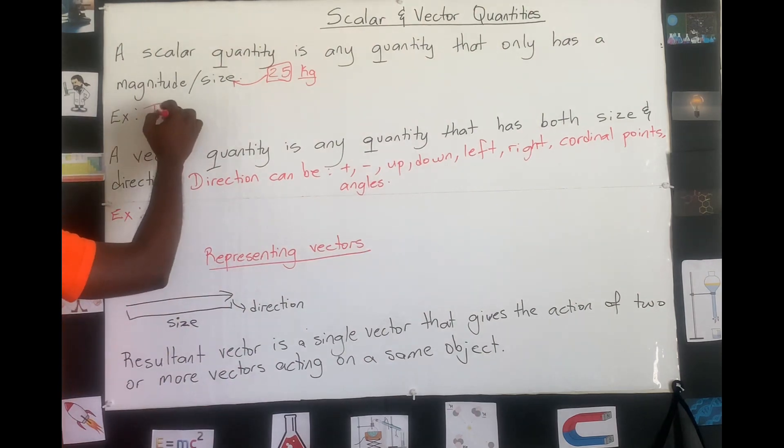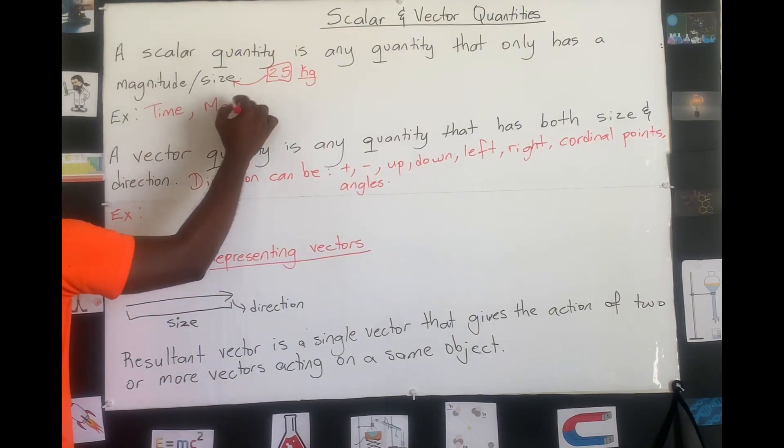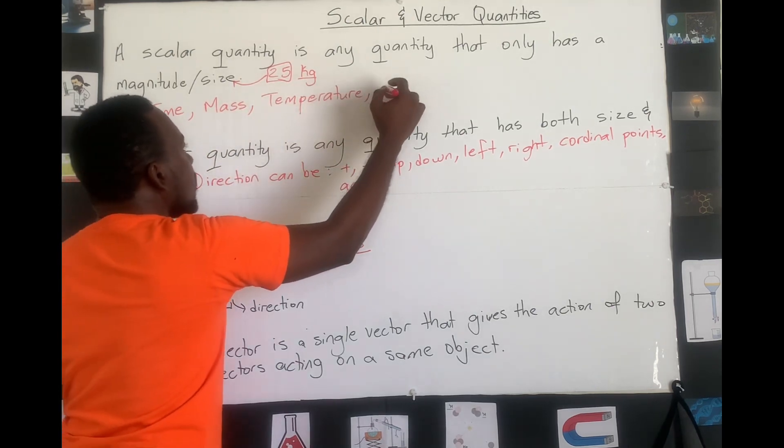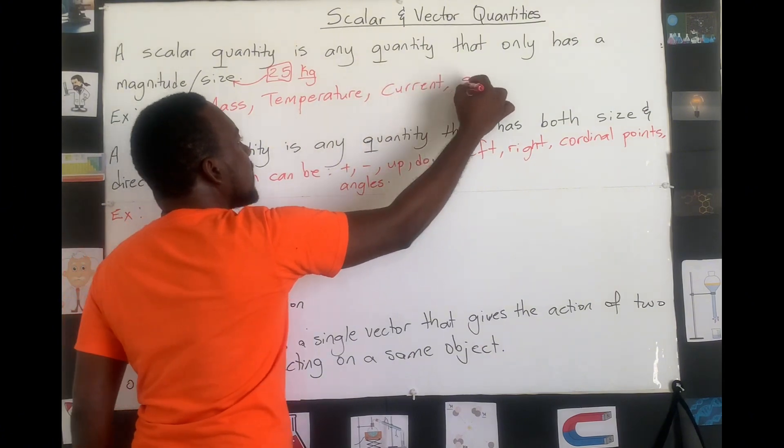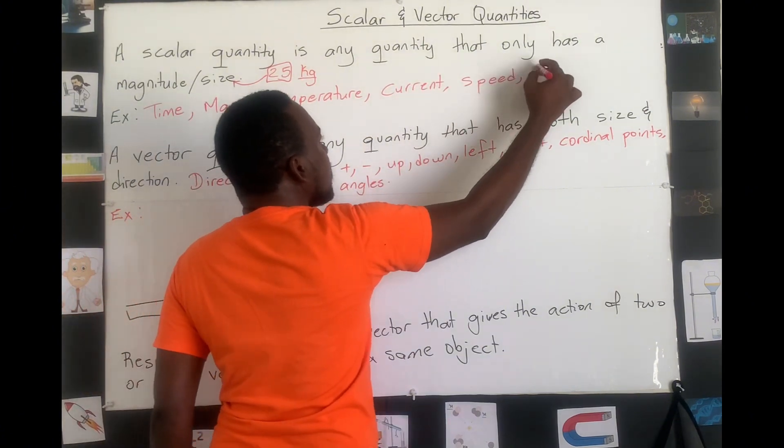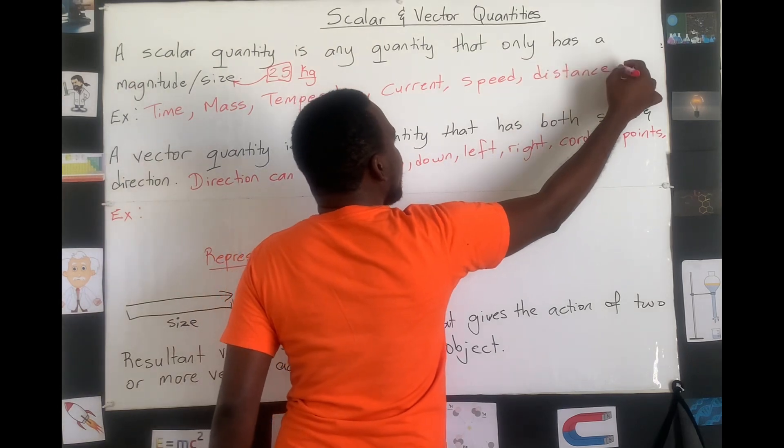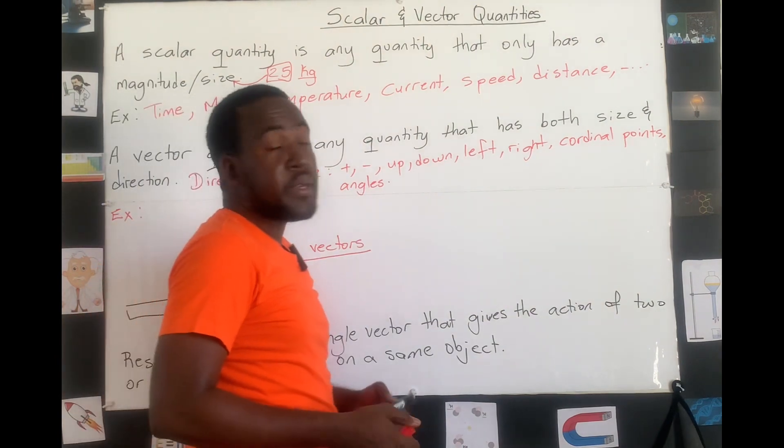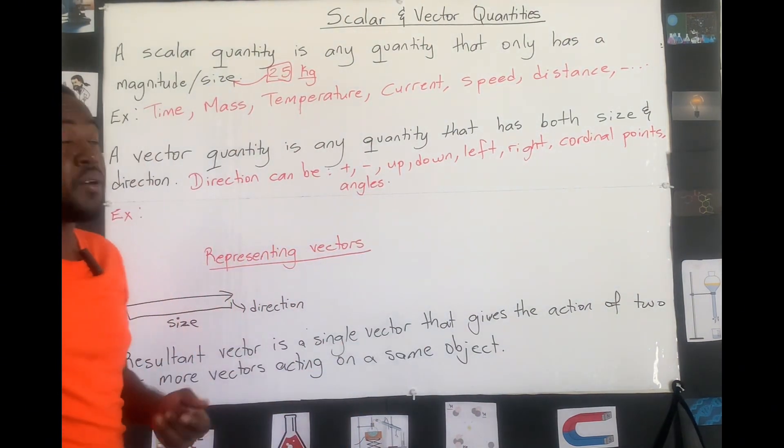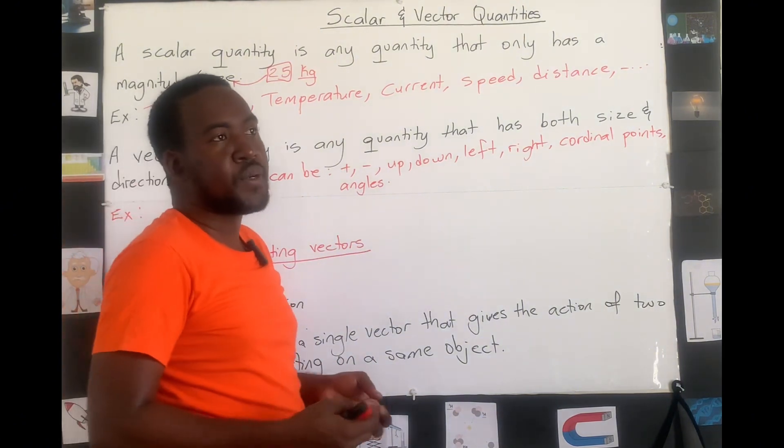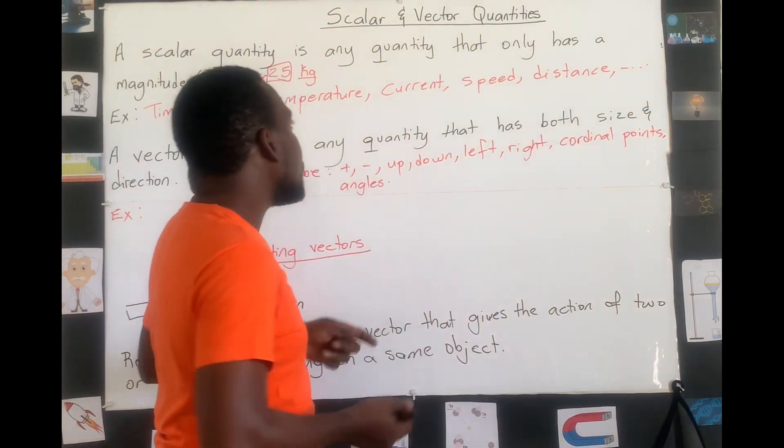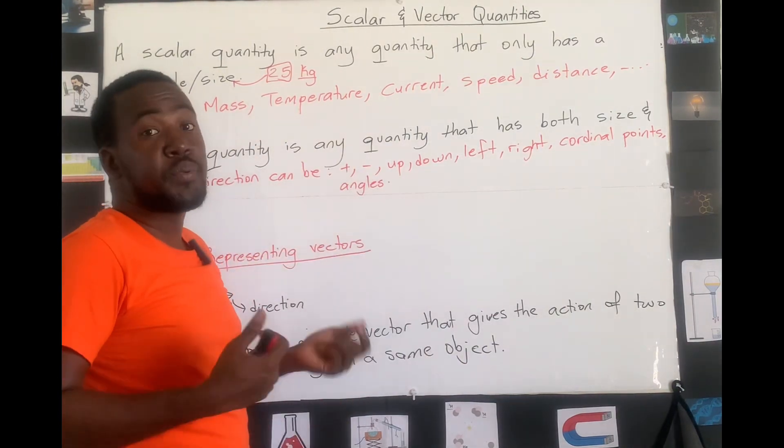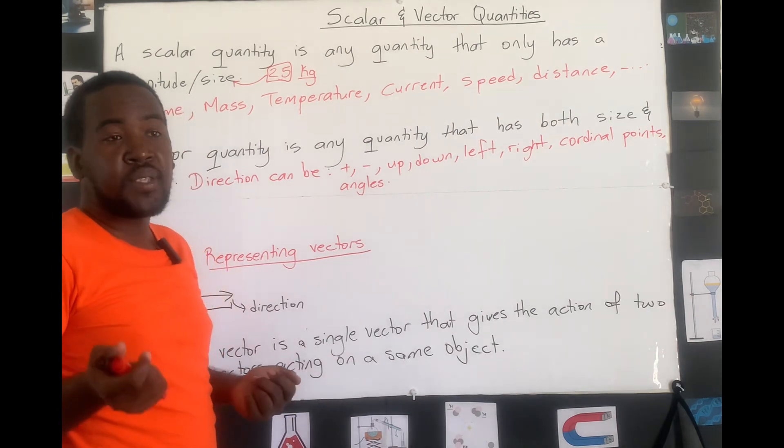Quantities such as time, mass, temperature, current, speed, distance, and much more are quantities that are classified as scalar. Because when we write them or we measure them or we calculate them, we only give a size for it. The unit is a must because the unit differentiates if it's different from time, different from mass, different from temperature. But when we represent them, we only give it a number.